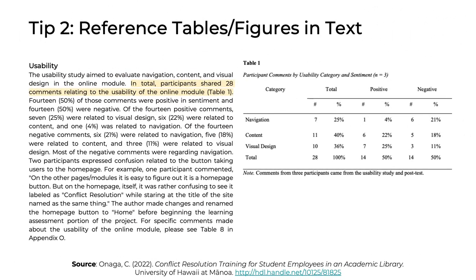Tip 2: Be sure to reference any tables or figures. This is part of APA style, and the idea is quite simple. If you have a table or figure in your paper, the body or narrative of the paper needs to reference that table or figure. Here's an example highlighted in yellow: 'In total, participants shared 28 comments related to the usability of the online module (Table 1).' The author is telling readers that if they want more information about those 28 comments, they should refer to Table 1.